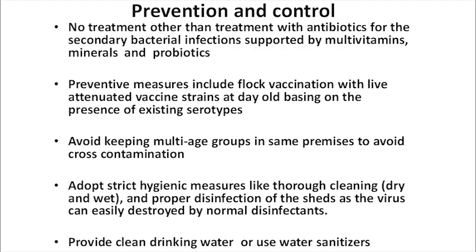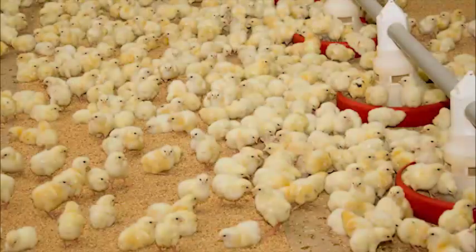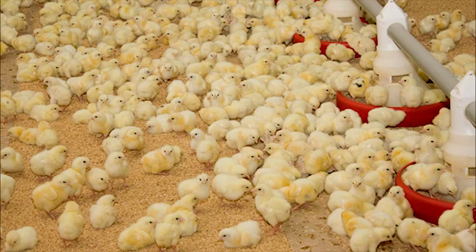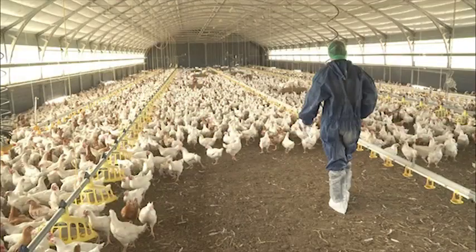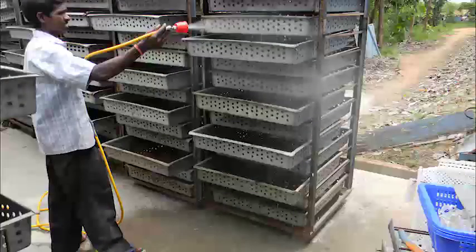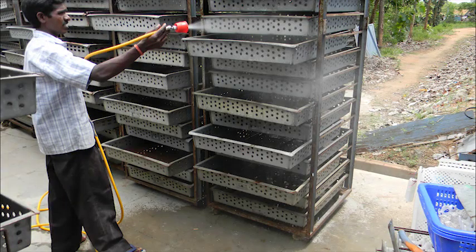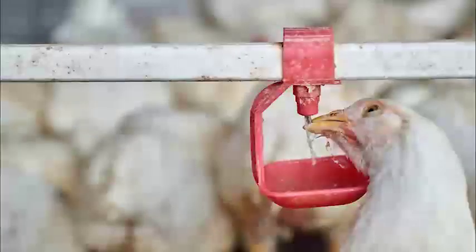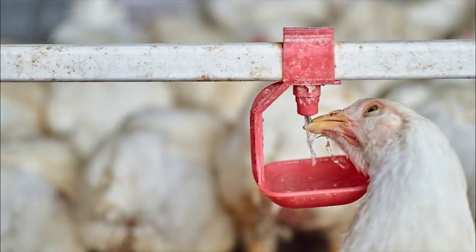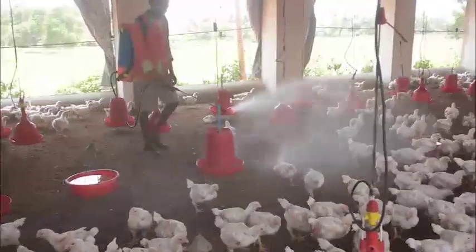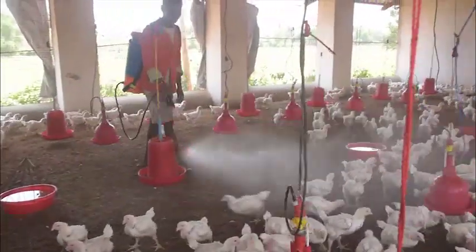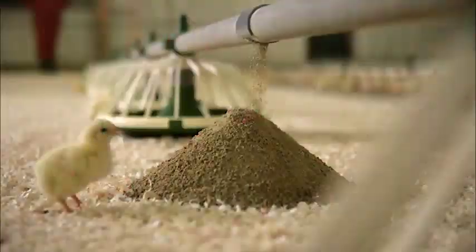Avoid keeping multi-age groups to reduce cross-contamination. Strict hygienic measures should be taken, including thorough cleaning — both dry and wet — and disinfection of the sheds, as the virus can be killed by common disinfectants. Provide clean water and use good sanitizers to reduce the bacterial load, particularly of E. coli.